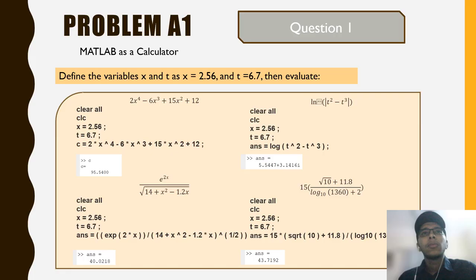In this assignment we have five problems and we answer two questions for each problem. First, MATLAB as a calculator. The question says: define the variable x and t as x equal to 0.36 and t equals 6.7, then evaluate the following equation.